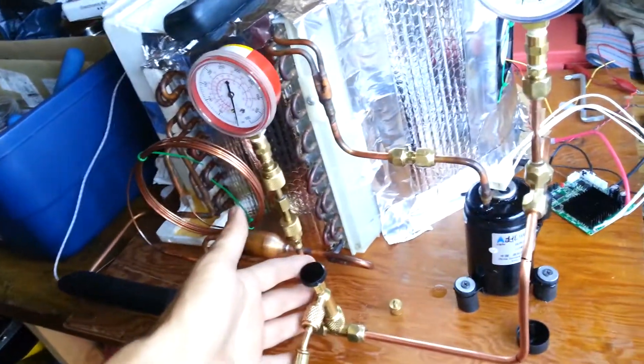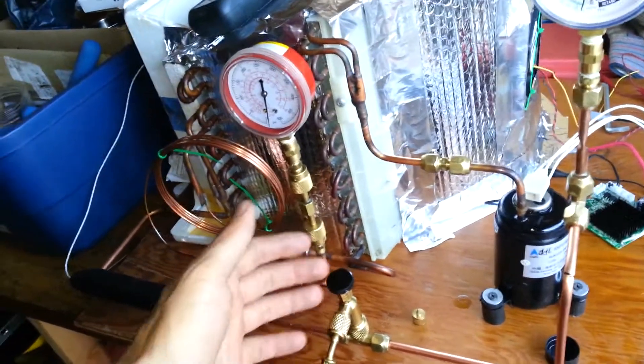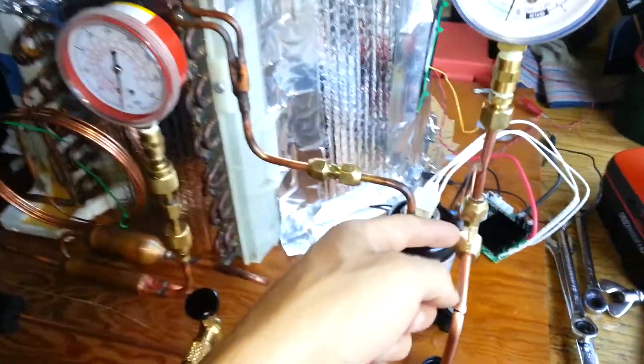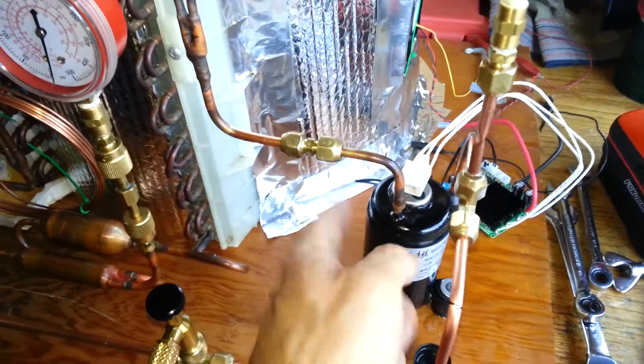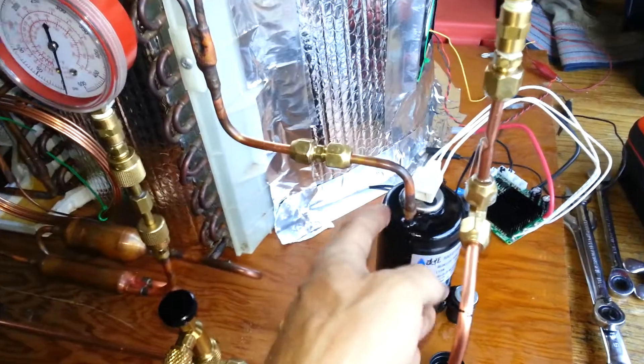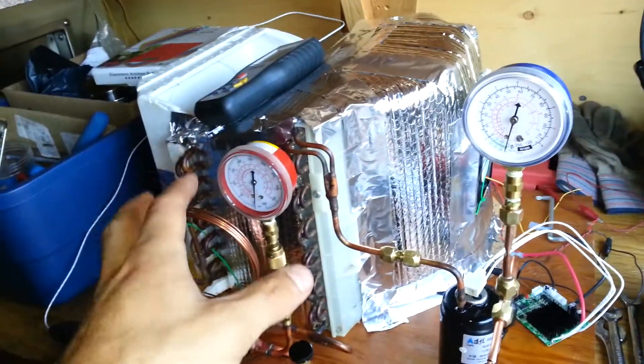And I designed the thing so that I have a service port here on the low side. I have a few places where I can break it and I can remove the compressor and do an oil change. I talked in another video about doing an oil change on this thing. And as you can see, I have a high side gauge and a low side gauge.